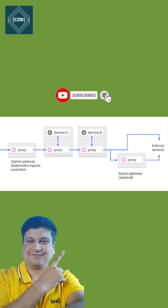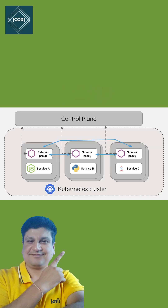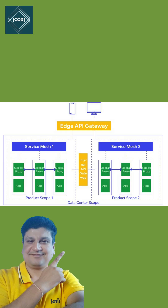Service mesh handles internal traffic between the services inside a cluster, as an array of lightweight network proxies deployed alongside the applications. The difference between API Gateway and service mesh is that API Gateway is responsible for routing external requests into a VPC.